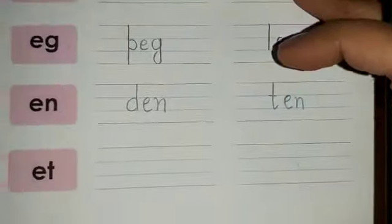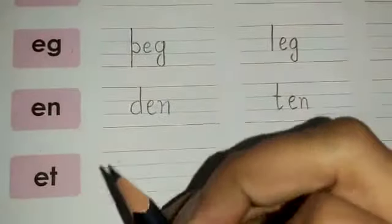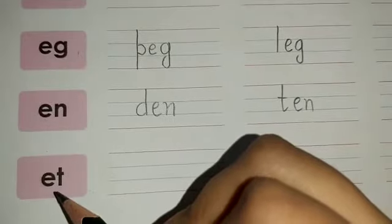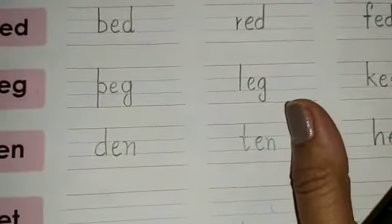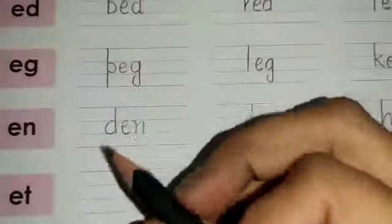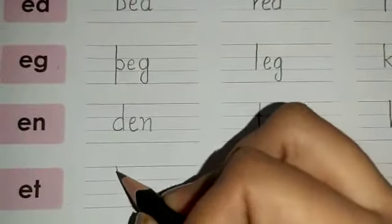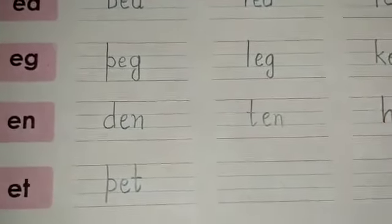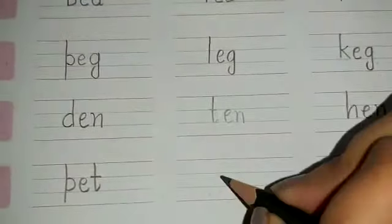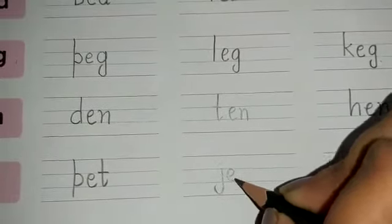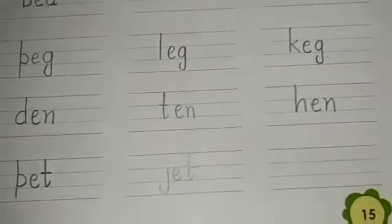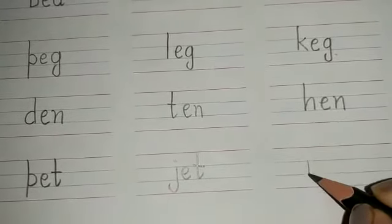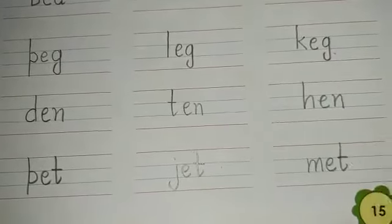Moving on to the last cluster — E-T. Tell me three words from the E-T cluster. The first word is pet, P-E-T, pet. The second word is jet, J-E-T, jet. And the next word is met, M-E-T, met.